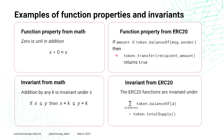What we want to say with this invariant is that every function must satisfy it. No matter which function from the ERC20 contract we call, it must hold — we must not lose any tokens, and we must not have more tokens than the total supply.